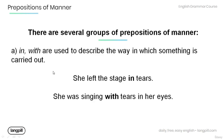There are several groups of prepositions of manner. Group A: 'in' and 'with'. These are used to describe the way in which something is carried out. For example: 'She left the stage in tears.' 'She was singing with tears in her eyes.'